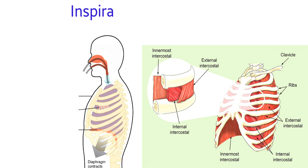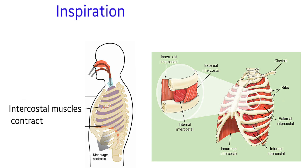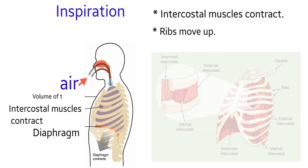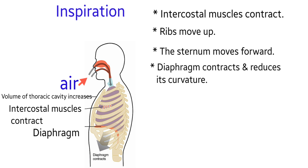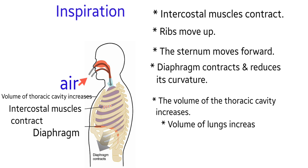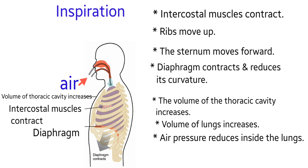During inspiration, air enters into the lungs. For that, the volume of the lungs should increase, and the volume of the thoracic cavity increases. This is brought about by the simultaneous contraction of the diaphragm and the intercostal muscles. When the intercostal muscles contract, the ribs move up and the sternum moves forward. At the same time, the diaphragm contracts and reduces its curvature. These movements increase the volume of the thoracic cavity and the lungs, which temporarily reduces air pressure inside the lungs, so air enters from the atmosphere through the air passages.